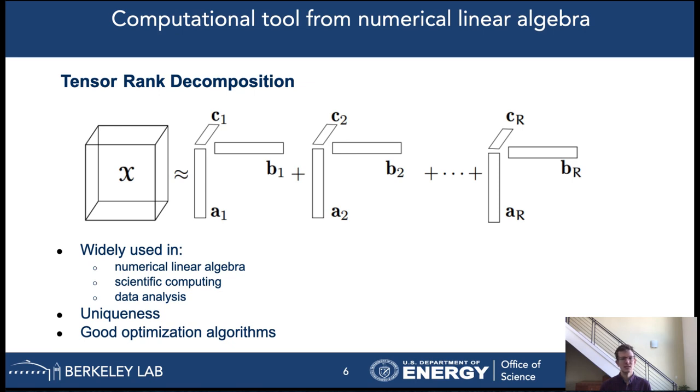One of the challenges that we will face in using this structure for circuit synthesis purposes is the following. Assume that the tensor X corresponds in some sense to a unitary transformation. It is clear that in that case the R rank-1 tensors will not necessarily correspond to unitary matrices. Furthermore, we will also need to figure out how to implement the sum of R rank-1 tensors in a quantum circuit.